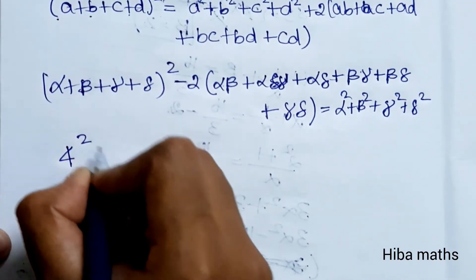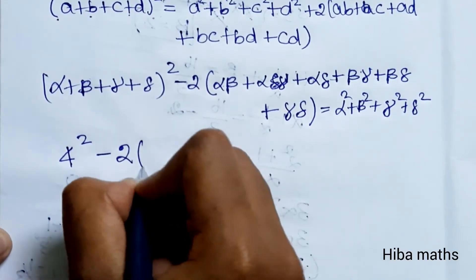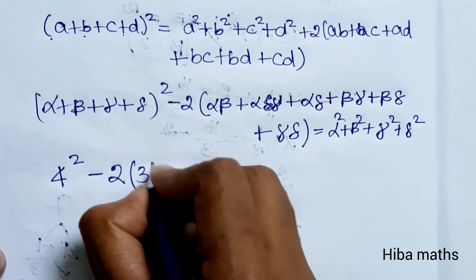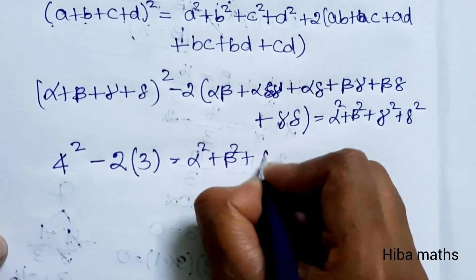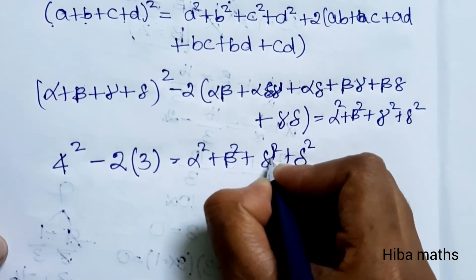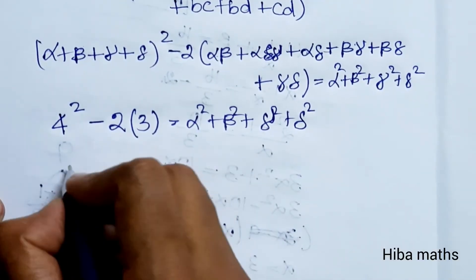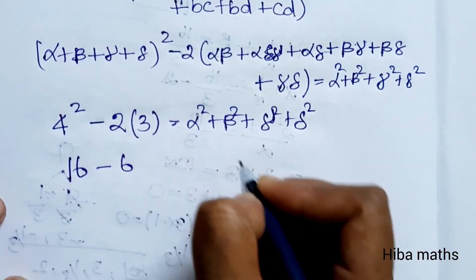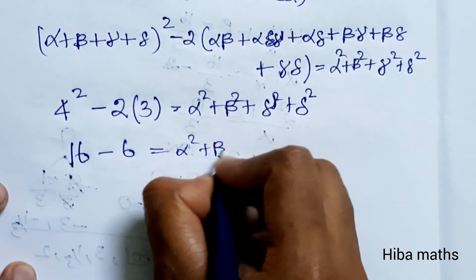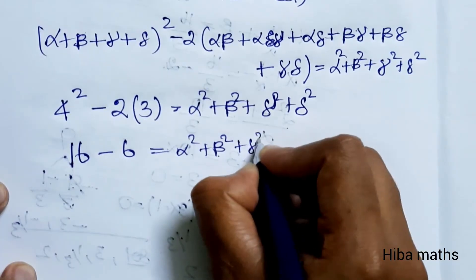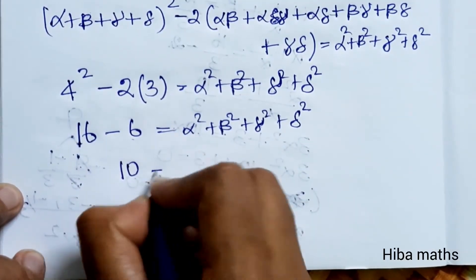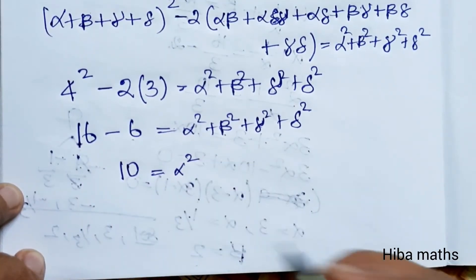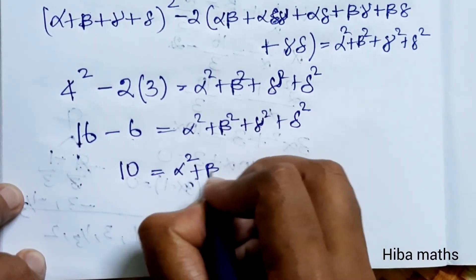We know that: sum of squares equals 4 square minus 2 times 3. That is 16 minus 6, which equals 10. So 10 is the sum of the squares of the roots.